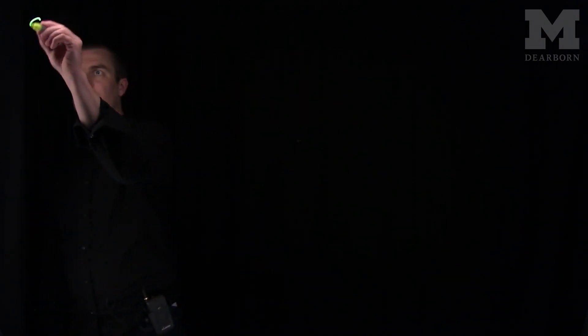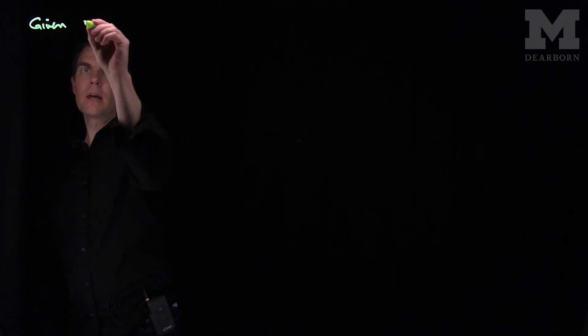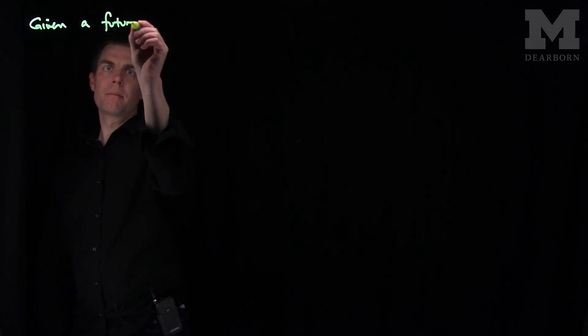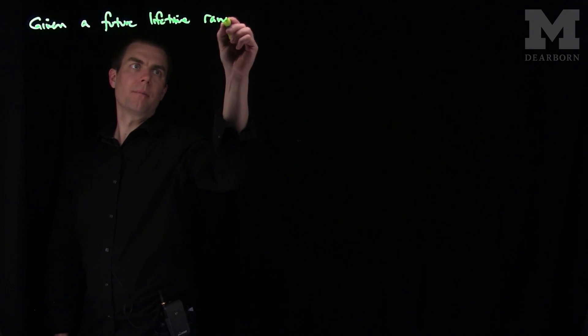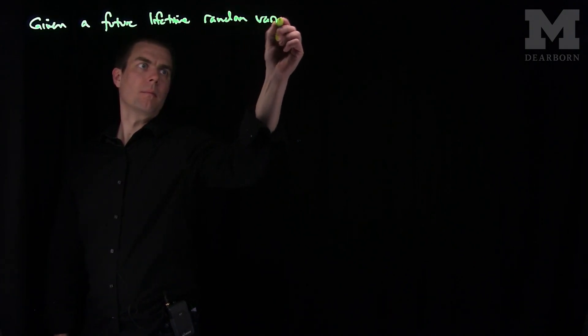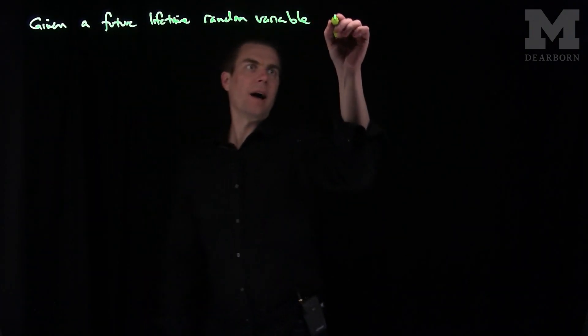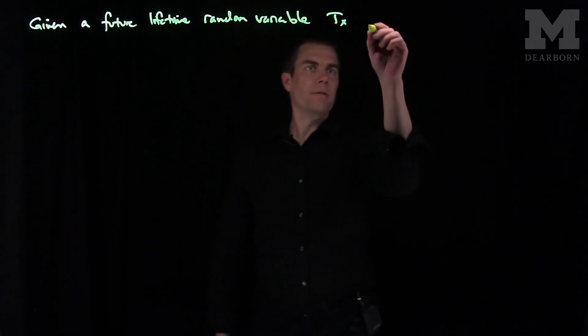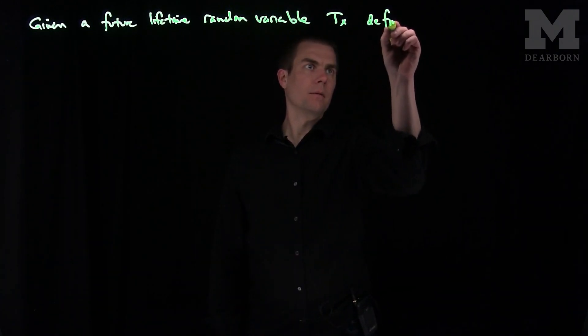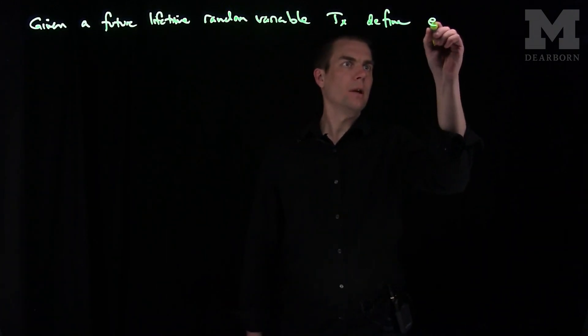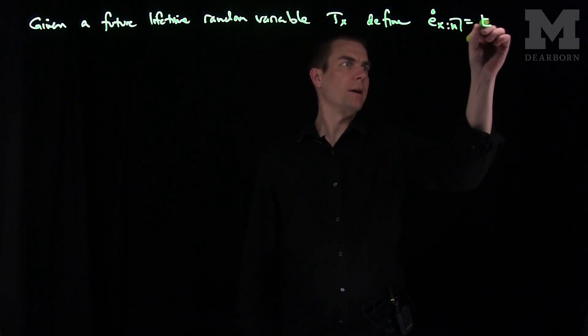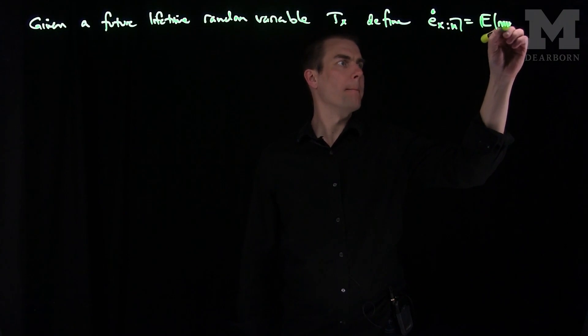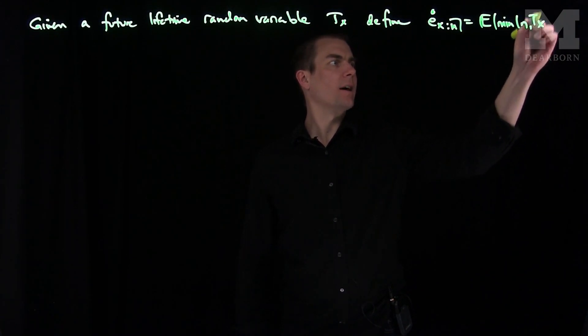So if we are given a future lifetime random variable Tx, we can define e(x,n,circle) as the expected value of the minimum of n and Tx.